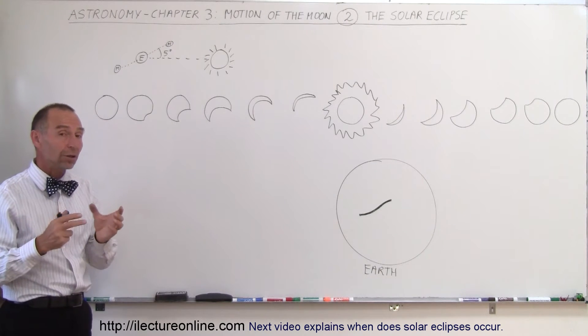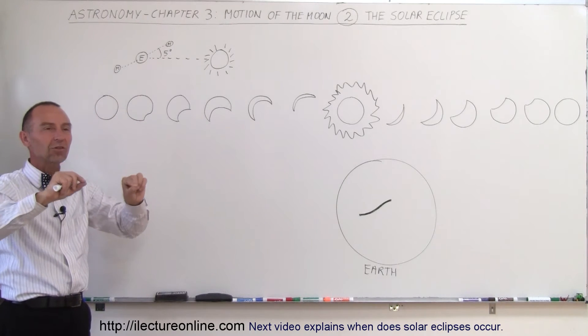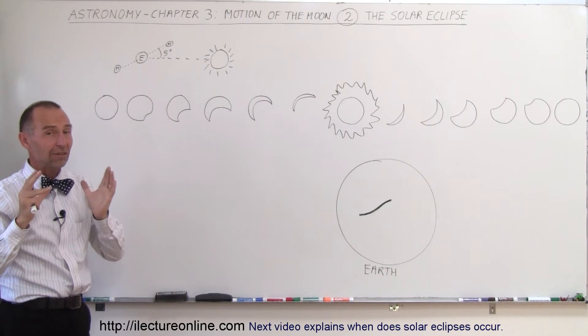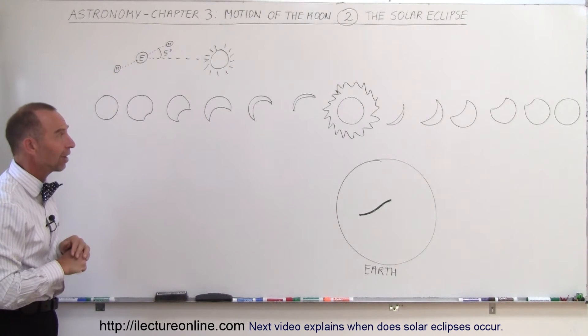And sometimes we call it an annular solar eclipse, where you can still see the ring of the Sun around the Moon. Of course, when you do that, you have to have special glasses on to protect your eyesight.